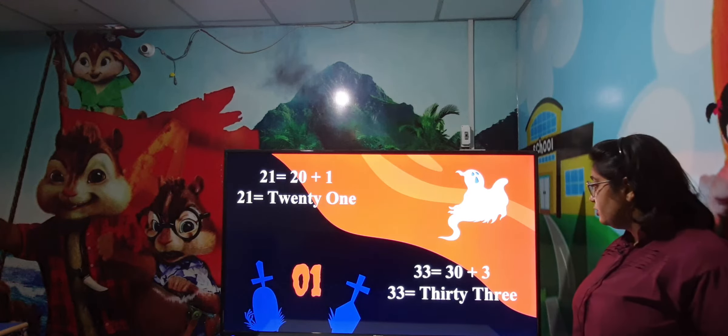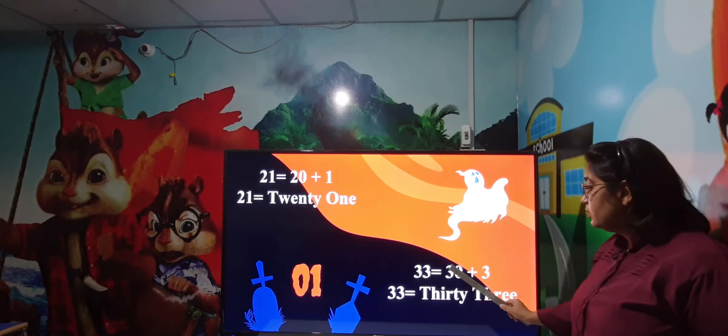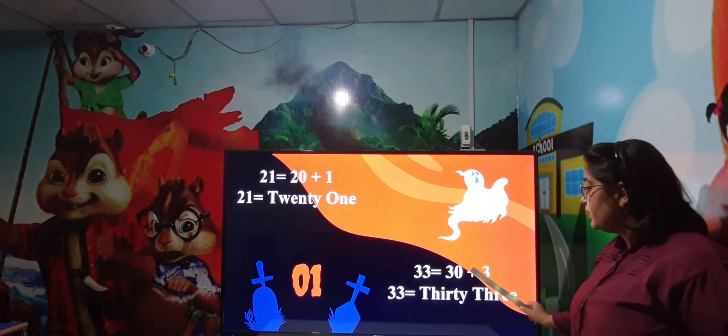Next is your 33. 30 plus 3 = 33. Kitne words sunai de rahe hain 33 mein? Do words sunai de rahe hain: ek hai 30 aur doosra hai 3. To isliye hamari spelling kya ho jaegi? Pehle hum 30 ki spelling likhenge, aur phir hum 3 ki spelling likhenge. 33: T-H-I-R-T-Y (30) + T-H-R-E-E (3) = THIRTY THREE.